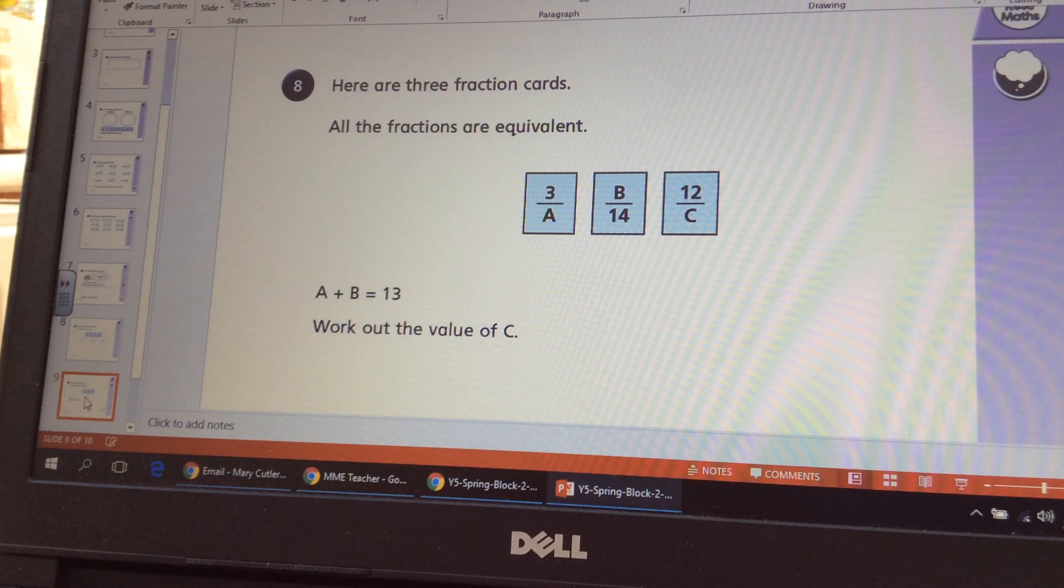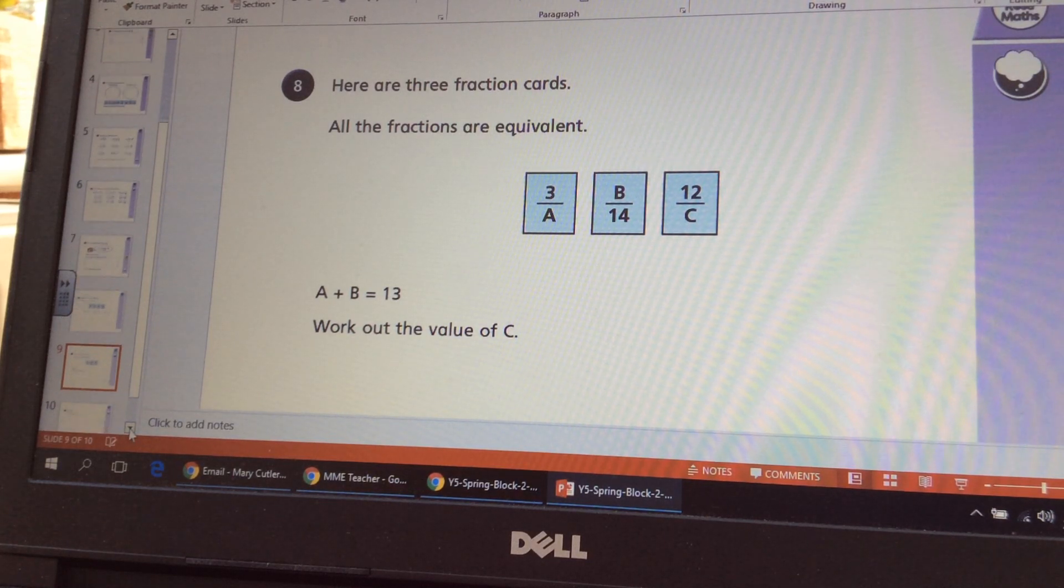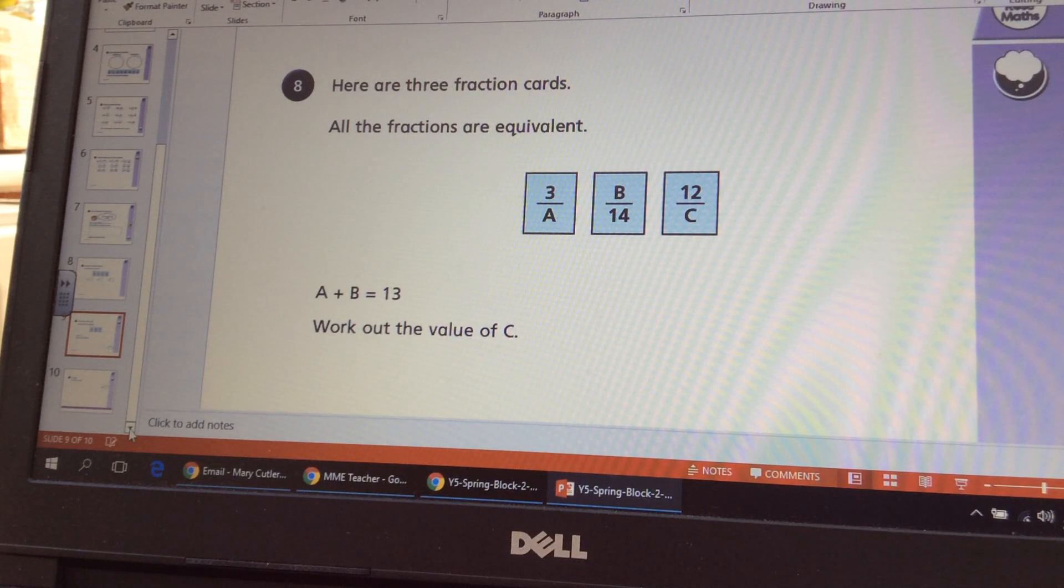And if I know the factors, I should be able to work out what A is. Once I can work out what A is from using the factors of fourteen, I should then be able to work out B and C, remembering that whatever I times my denominator by, I also need to multiply the numerator by the same amount to keep the fraction equivalent, or divide the denominator by the same amount as the numerator. So I'm looking for factors of fourteen to help me there with that one.